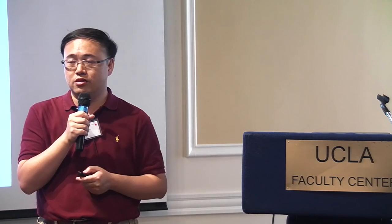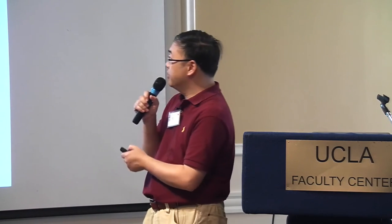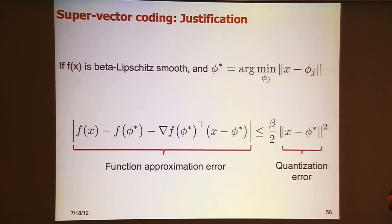You can do higher-order approximations by using higher-order information to form the local coordinate. The function approximation error is upper bounded just by the quantization error, which is completely justified. You learn the basis by minimizing a k-means-type loss function. The coding method is very simple: first learn the dictionary using k-means or hierarchical k-means, then in the coding phase for a new data point x, obtain its sparse representation.